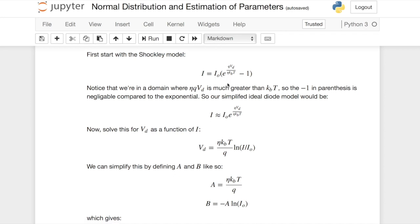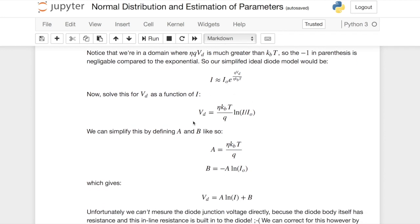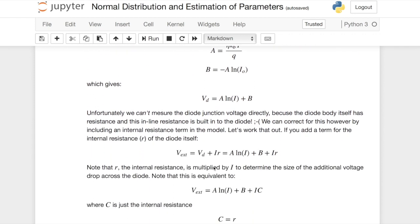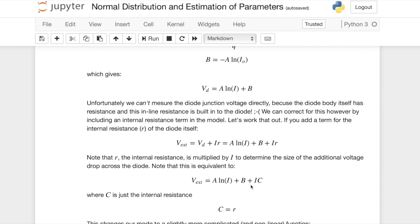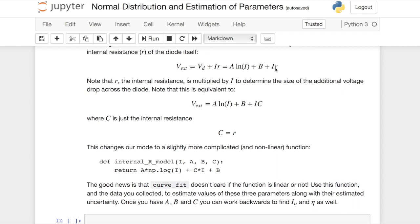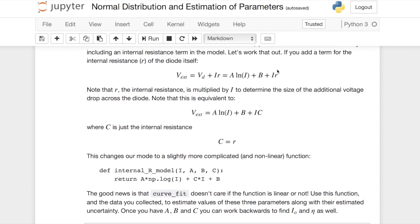But I think in the process of going through all the analysis and figuring out all the linearization parameters A, B, and ultimately C, when we got down here to our final model, A, B, and C relate to C as the resistance, the internal resistance of the diode effectively.